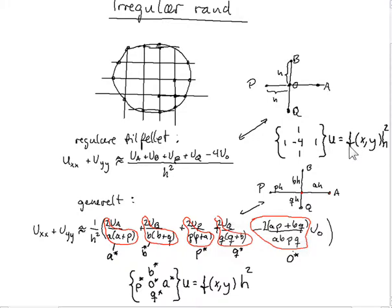In the case when we have irregular boundaries, we have to consider a more general situation like this. If we for example multiply this H with some parameter A, this length from the point where we are standing to A is then AH. Similarly this length is BH, this length is PH, this length is QH.